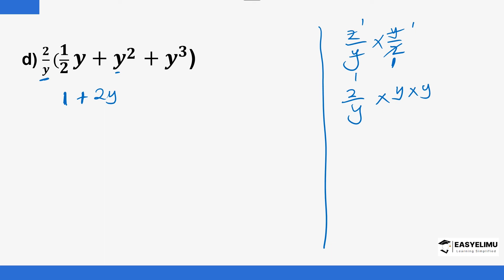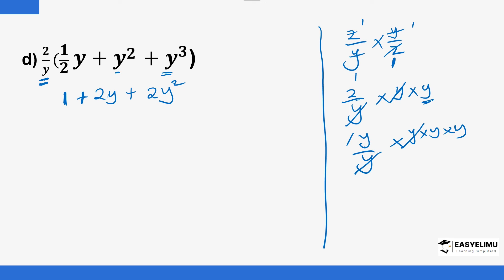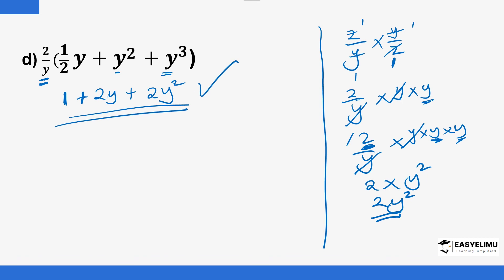For the term with y squared: 2 over y times y times y. Since y squared means y times y, one y cancels with the denominator, leaving 2 times y, which is 2y. For the y cubed term: 2 over y times y times y times y — one y cancels, leaving 2 times y squared, which is 2y squared. All the terms are different so you cannot simplify further. The signs inside the bracket remain unchanged because there is no negative sign before the bracket.